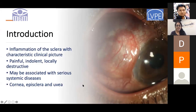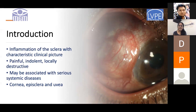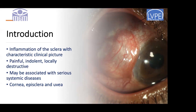Scleritis is inflammation of the sclera. It is extremely painful. It has a characteristic clinical picture - the patient comes in with very severe pain that radiates. It is locally destructive, meaning it can cause necrosis or tissue breakdown of the scleral tissue, and it can be associated with systemic diseases which can be quite grave. For example, it has association with rheumatoid arthritis and granulomatosis polyangiitis, which earlier we used to call Wegener's granulomatosis - two diseases with well-known association with scleritis.